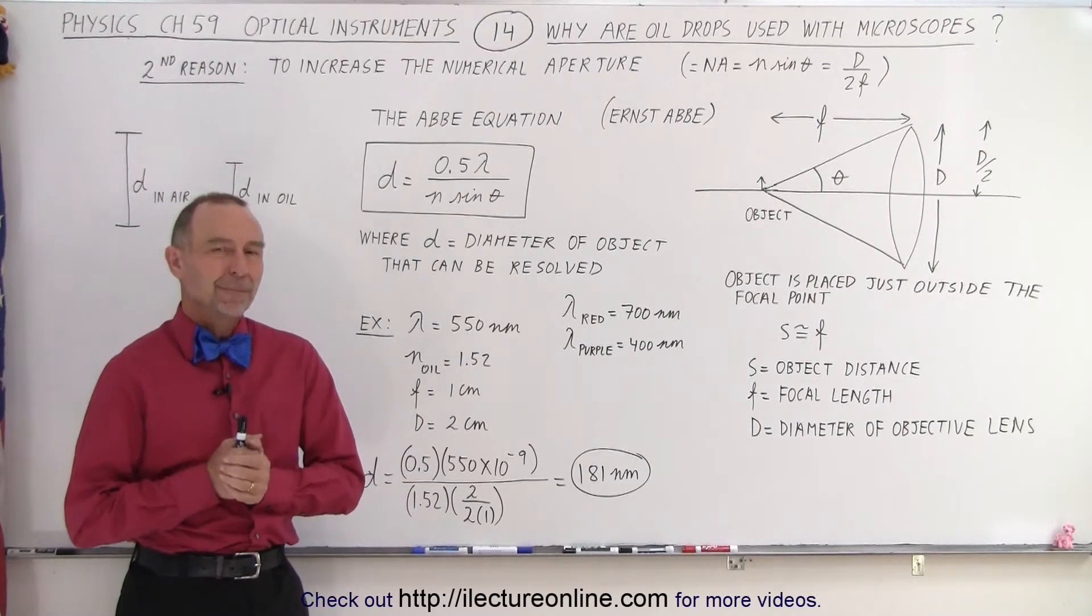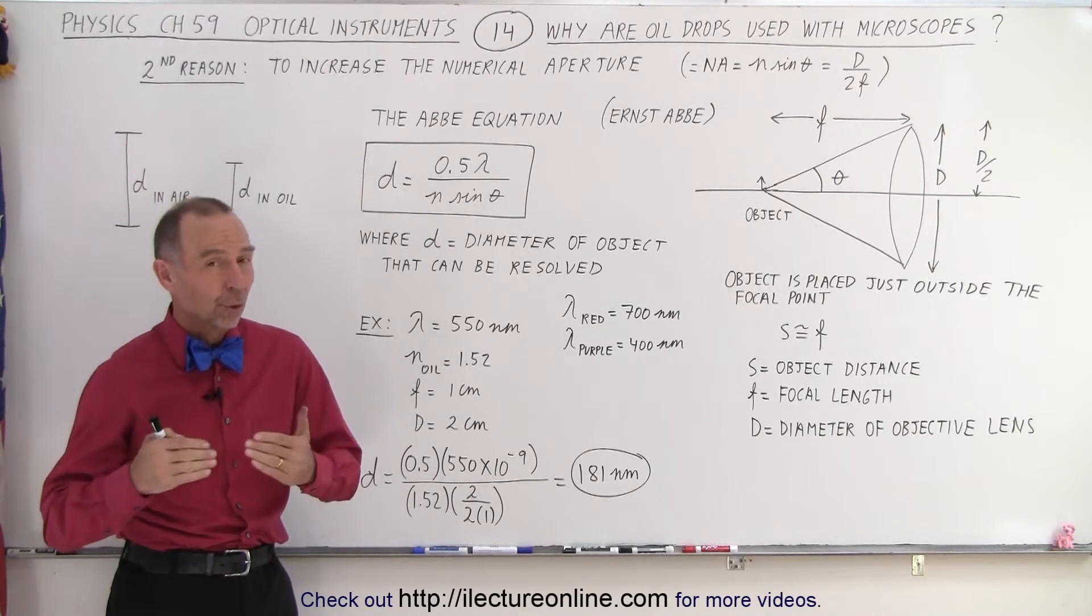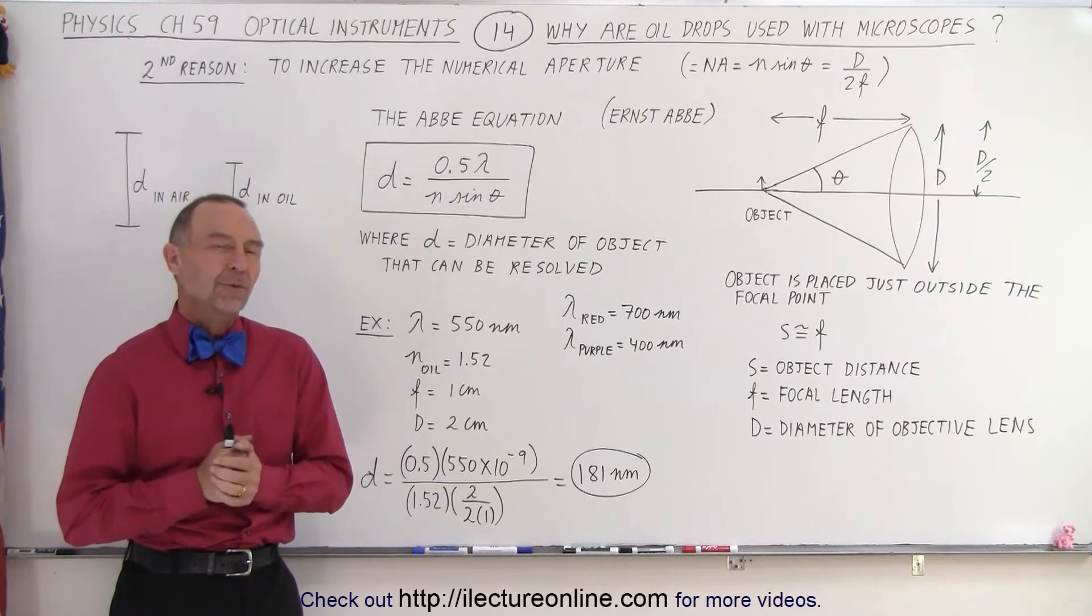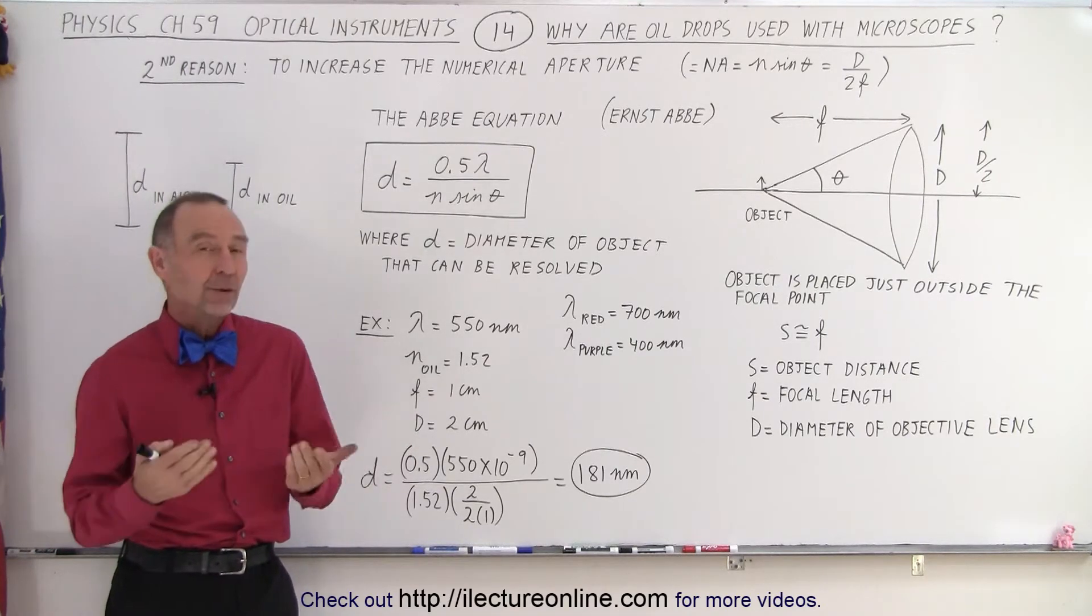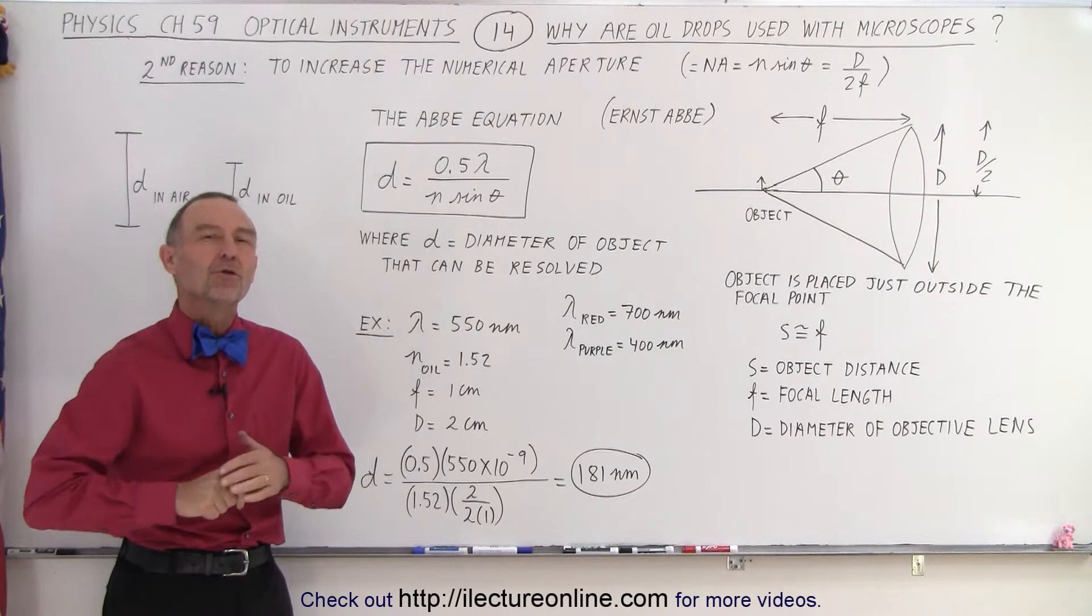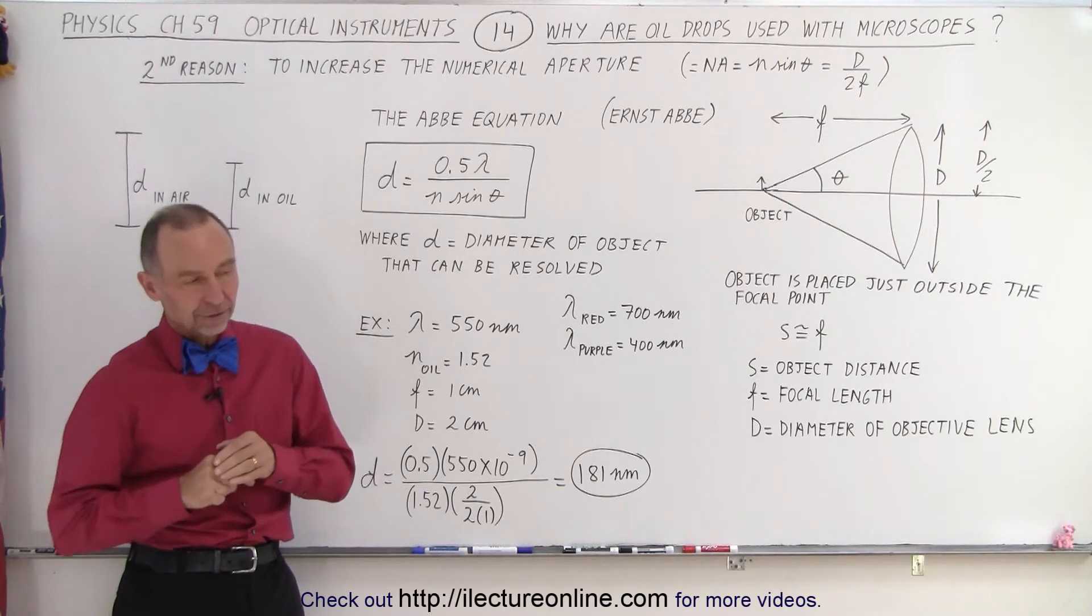Welcome to my lecture online. Now going back to the question, why do we use oil drops with microscopes? And here's the second reason: to increase the numerical aperture of the lens.